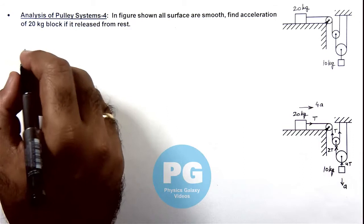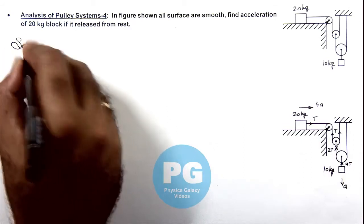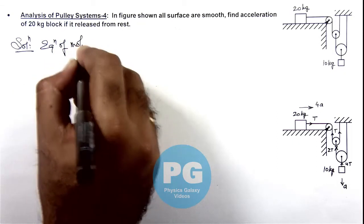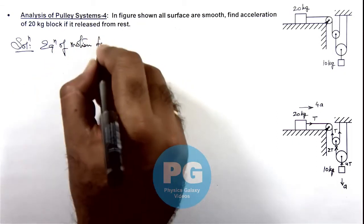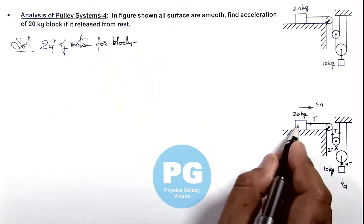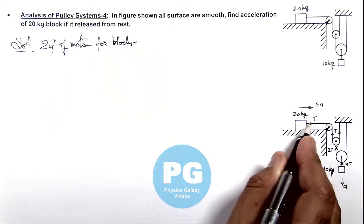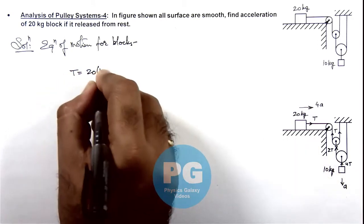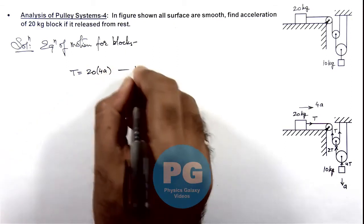Let's write down the equations of motion for the blocks. For this 20 kg block, the only force on it is T. So we can write T equals 20 multiplied by 4ay. This is our first equation.